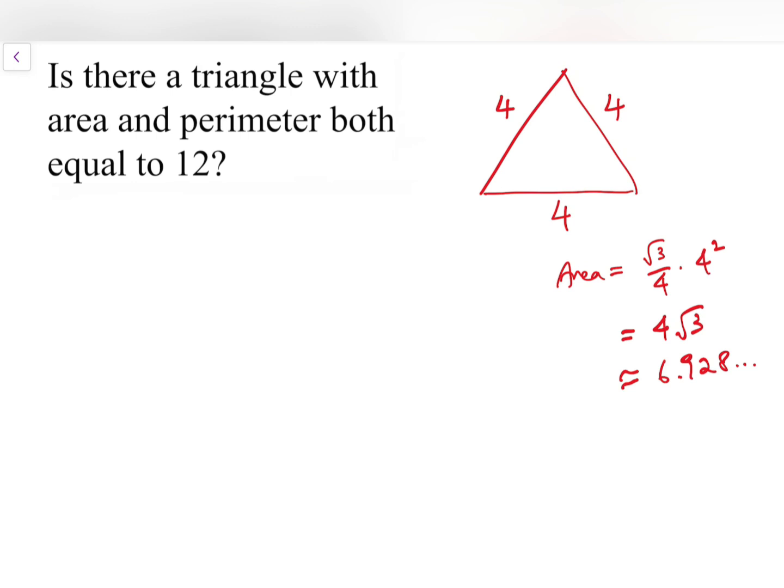The only thing that connects perimeter and area would be Heron's formula. So in general, if I have side lengths A, B, and C, and the semi-perimeter is S, then the area - if I let A be the area - is the square root of S times the product of the semi-perimeter minus each side length. So S times (S minus A) times (S minus B) times (S minus C), and then I multiply them all together.